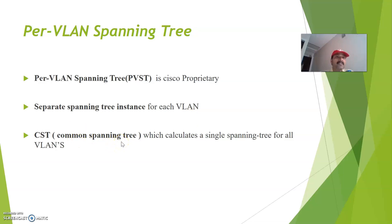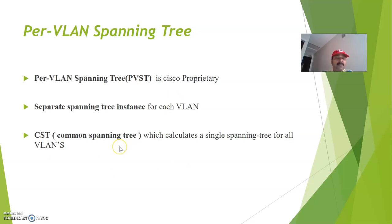That is the purpose of Per VLAN Spanning Tree. What is CST? CST is a Common Spanning Tree protocol which calculates a single spanning tree for all VLANs. So if there are 100 VLANs, there will be only a single instance of STP running for all VLANs. That is the difference between CST and PVST.